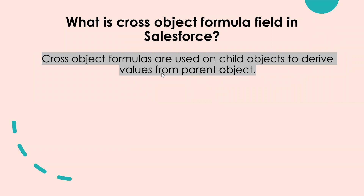Cross-object formula fields are used on child objects to derive values from the parent object. So if you have two objects connected via a parent-child relationship and you have a requirement to populate something from the parent object record onto the child object, then you will create a cross-object formula field on the child record.